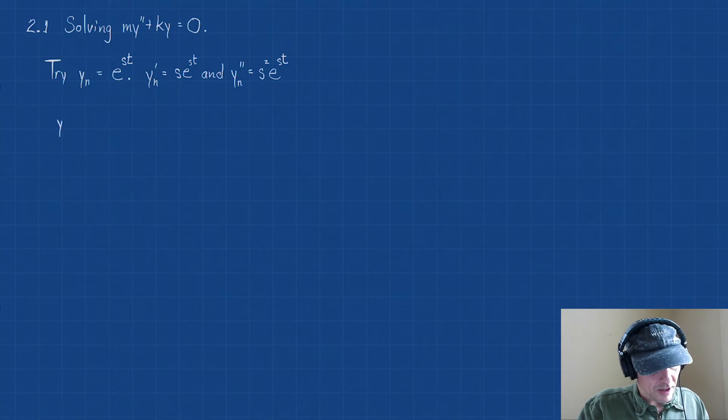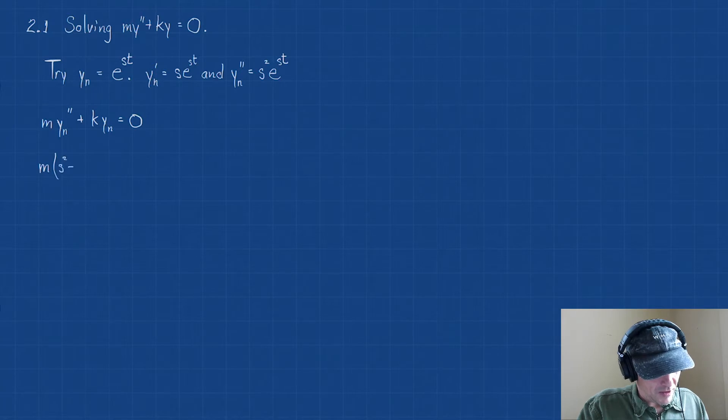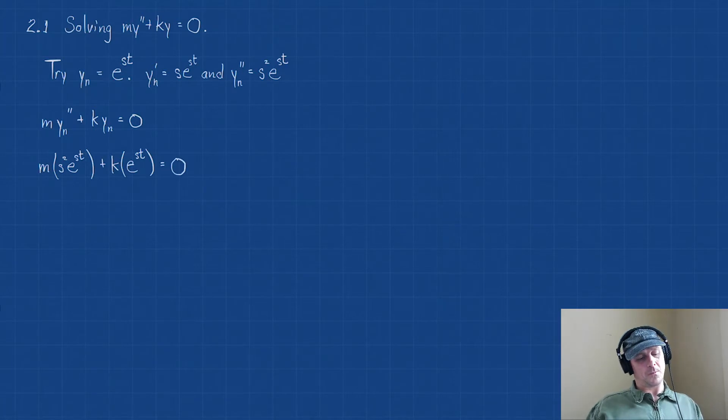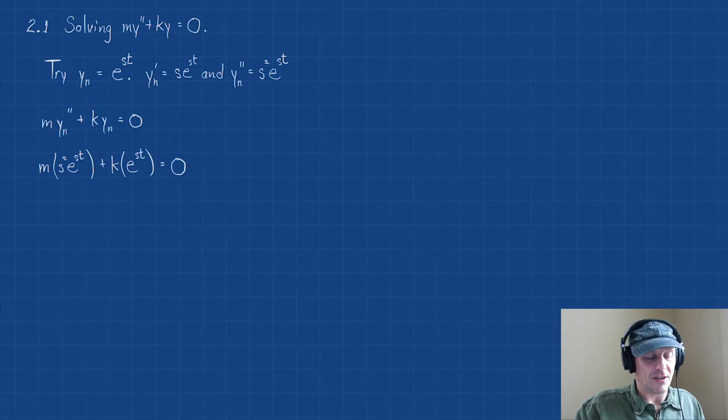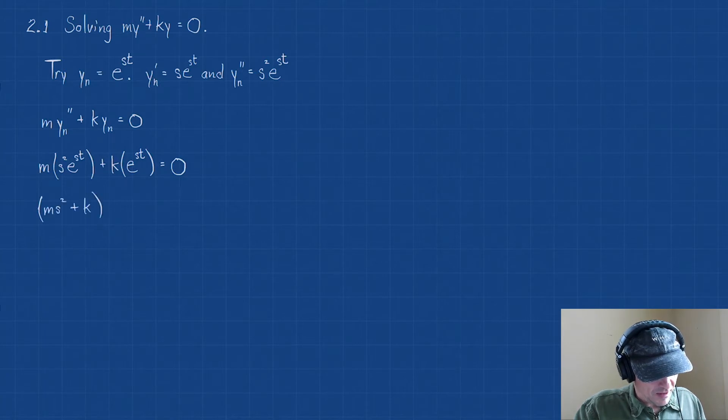And now let's substitute all these in. We have m·y_n'' + k·y_n = 0. Let's substitute and solve. So this is going to give me m·s²·e^(st) + k·e^(st) = 0. Let's keep going. Notice that what this really is saying is you could think of it as dividing out by the exponential, or we could factor the exponential. And if we did, we'd have (ms² + k)·e^(st) = 0. So what this is really saying is this implies that ms² + k = 0.